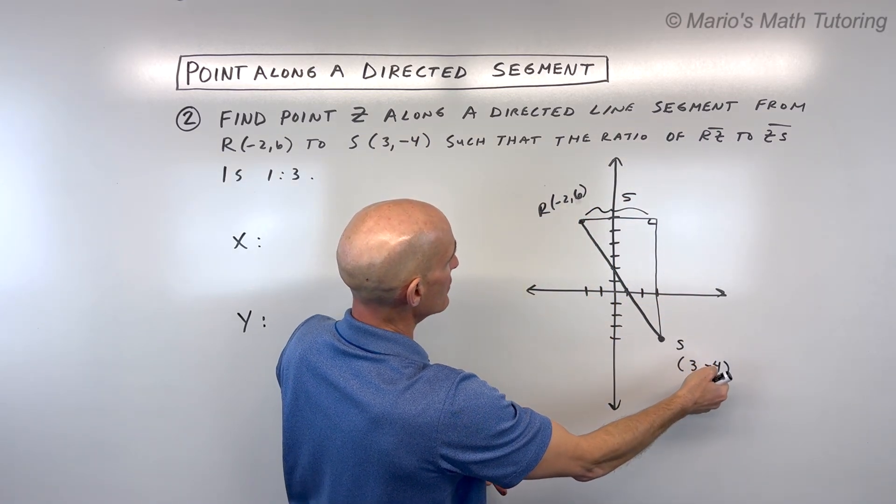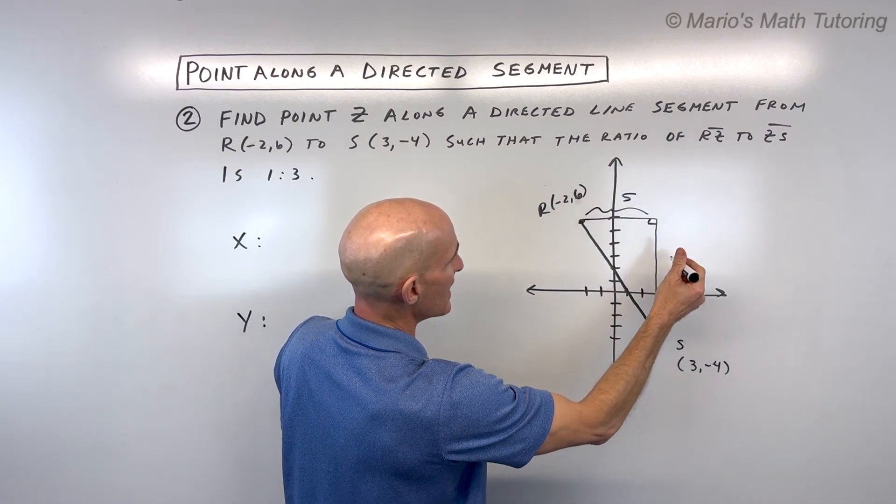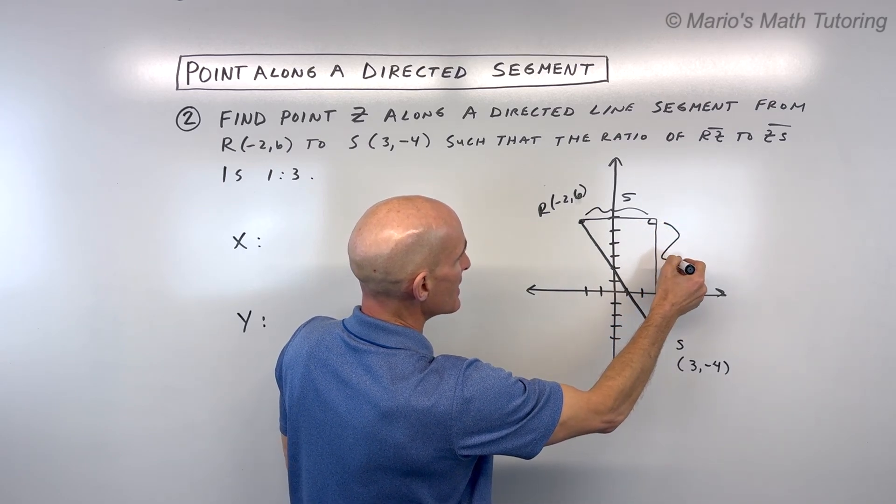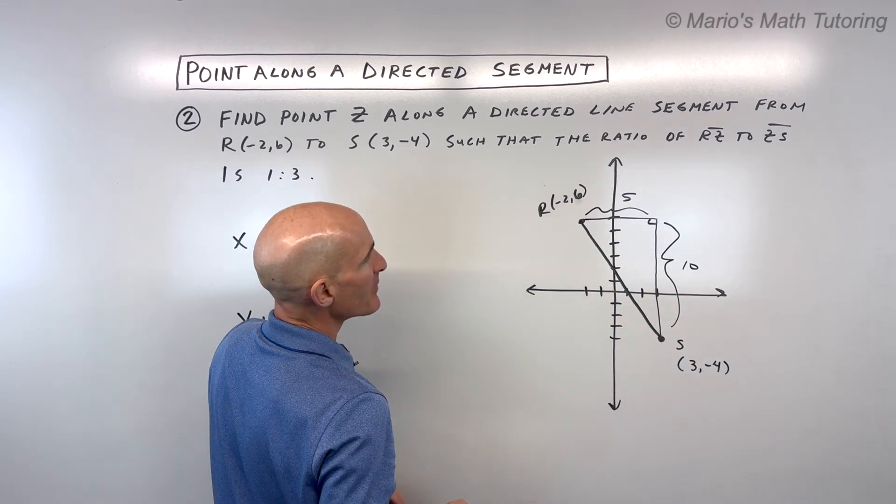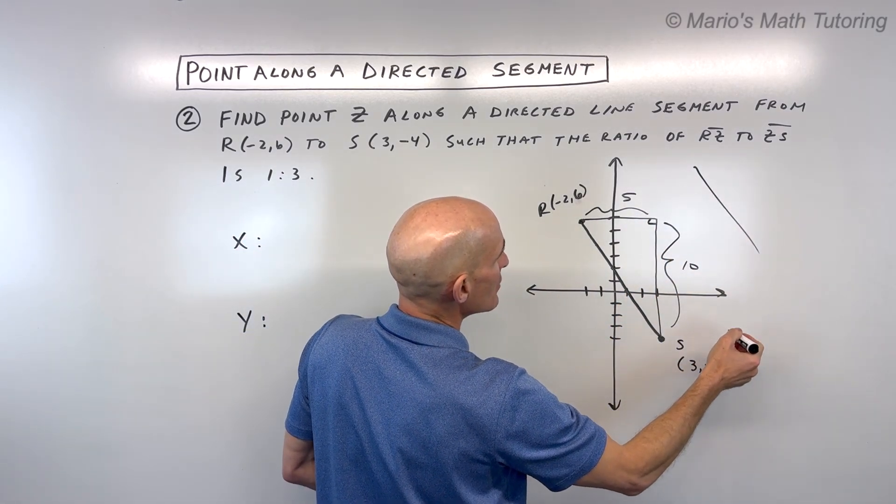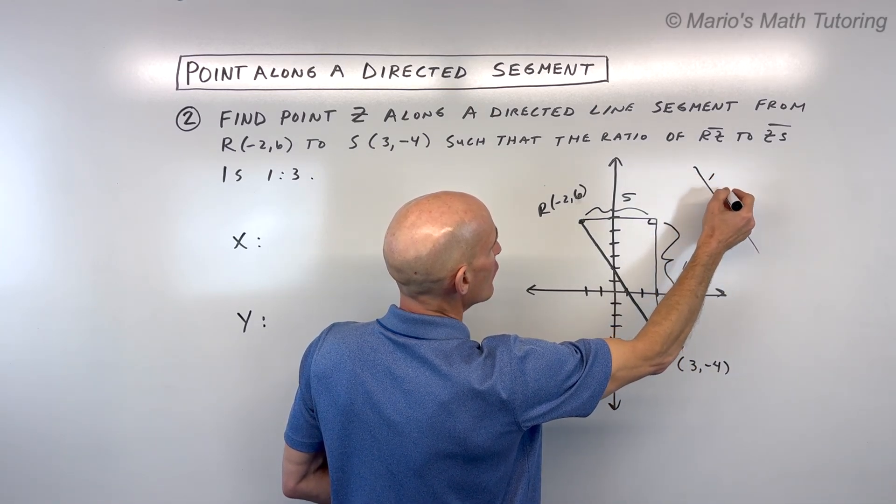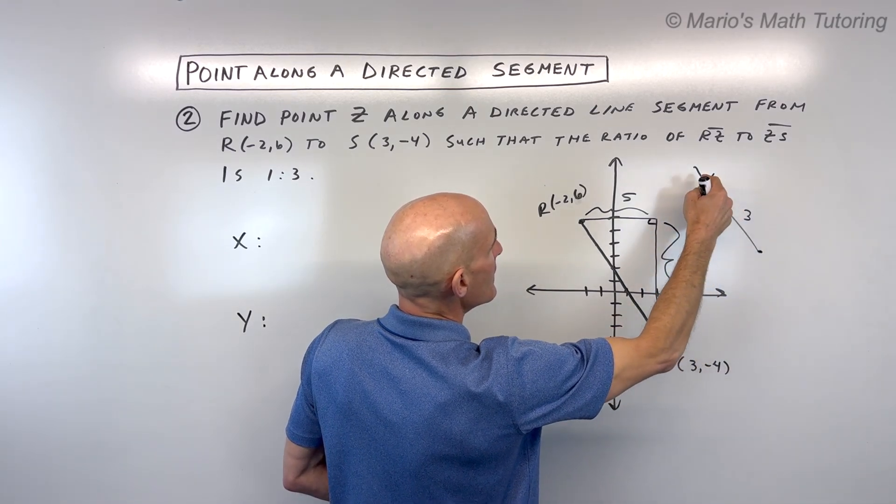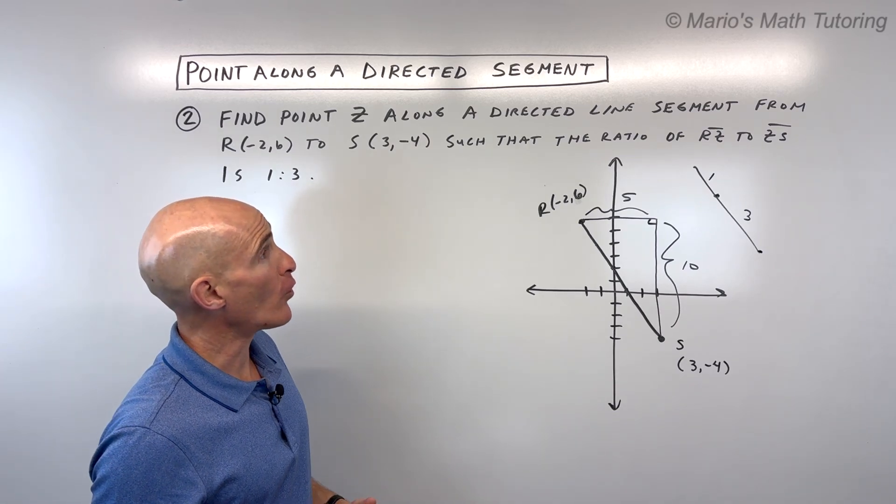And then same thing here, 6 minus negative 4 is 10 units or you can count. So that's this vertical distance. But the thing is, if we look at a segment, let's just say this is our line segment, and we want it to be in a ratio of 1 to 3, that's actually like 4 parts. 1 plus 3 is 4.